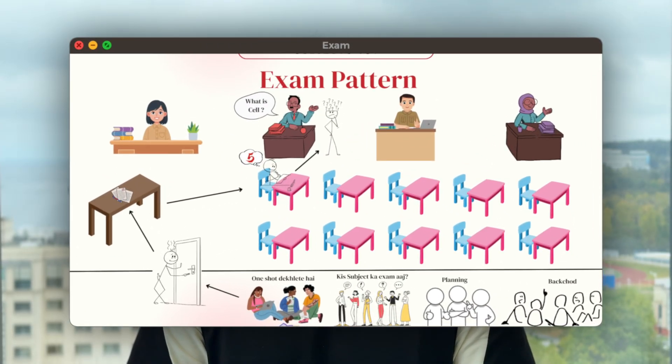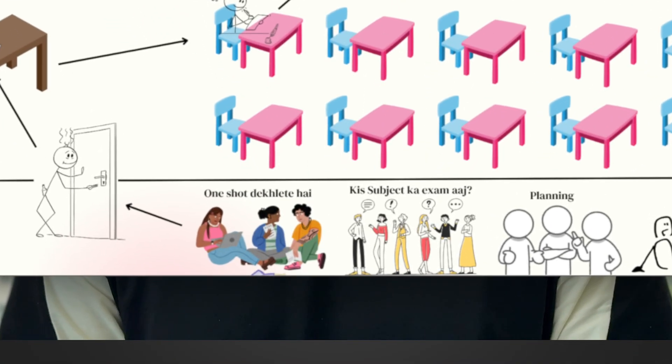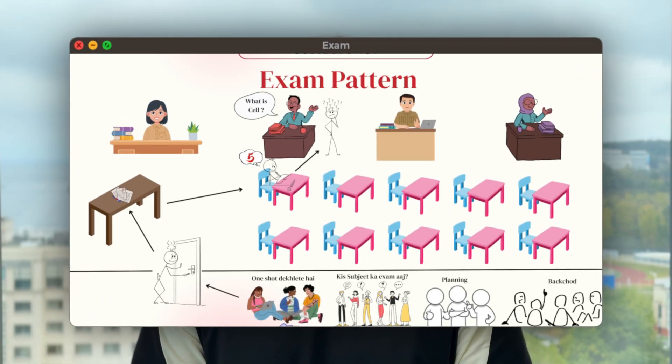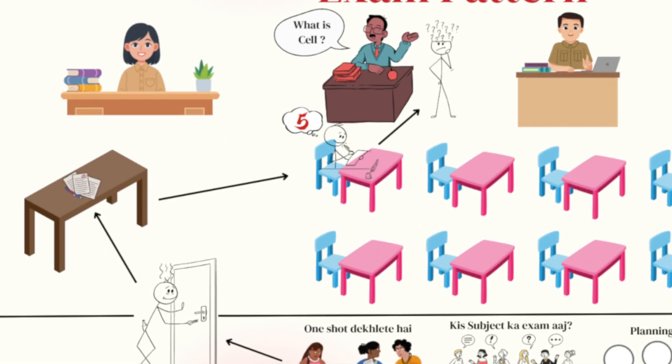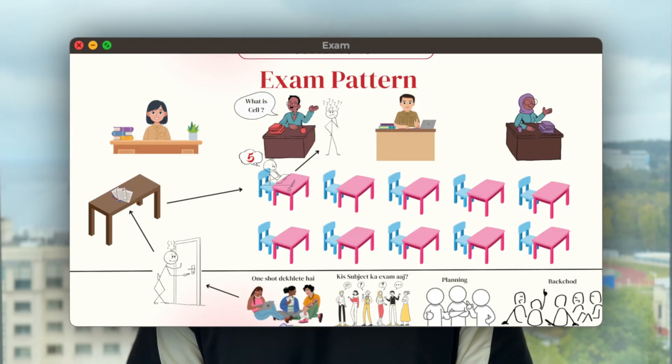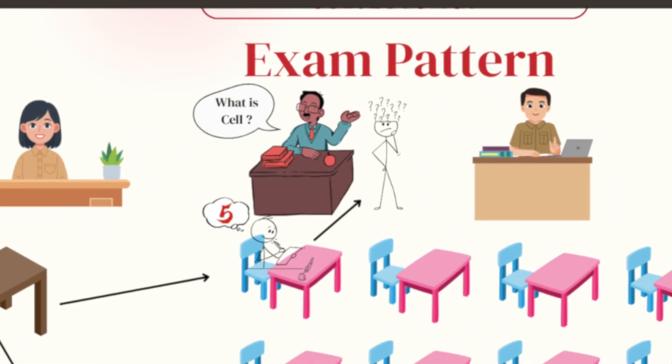Now let's understand the exam pattern — how exams are taken in your first year. Exams differ from subject to subject and also from university to university. For biology and anatomy, the exam will be taken by five to six teachers. All first-year students' exams are conducted on one day — students stand outside the class, go in one by one, take a question paper, prepare for 10 minutes, then go to the teacher and explain the question from their ticket.